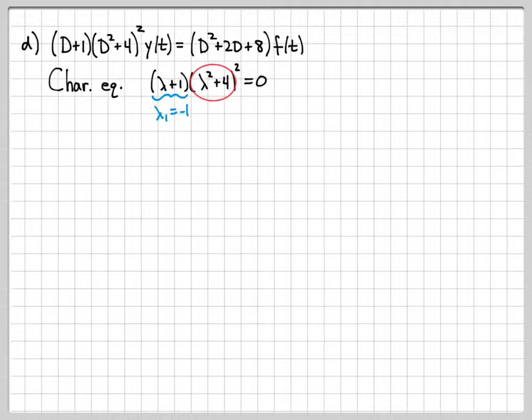So lambda 1 is negative 1. We know what the roots of lambda squared plus 4 are. It's just plus or minus j2. But these are repeated roots. Since we have this squared, these roots are in the same location. They're still at plus or minus j2. But now at each spot, so at j2, there's now two roots there. And at minus j2, there are actually two roots there.